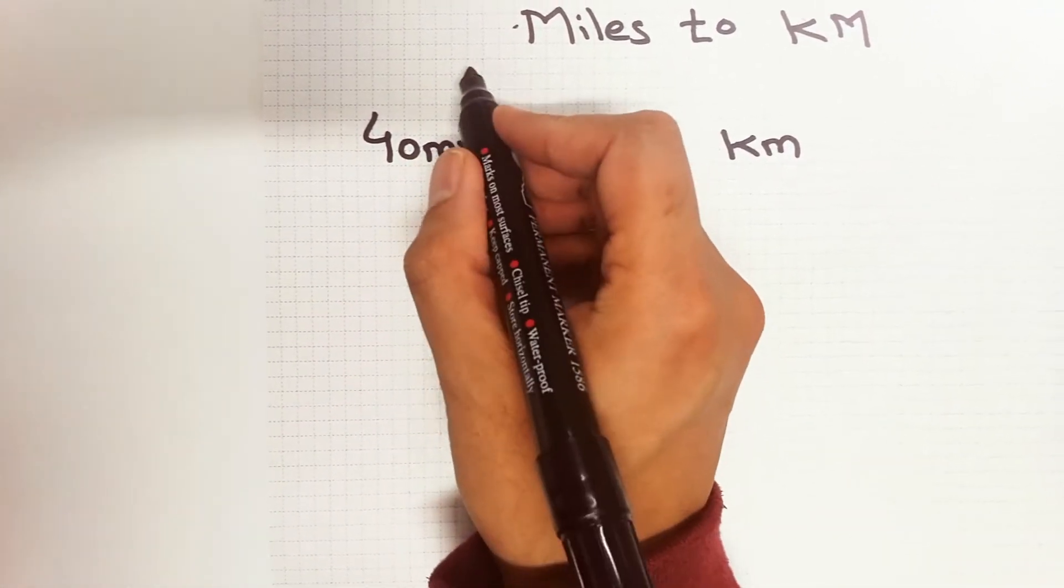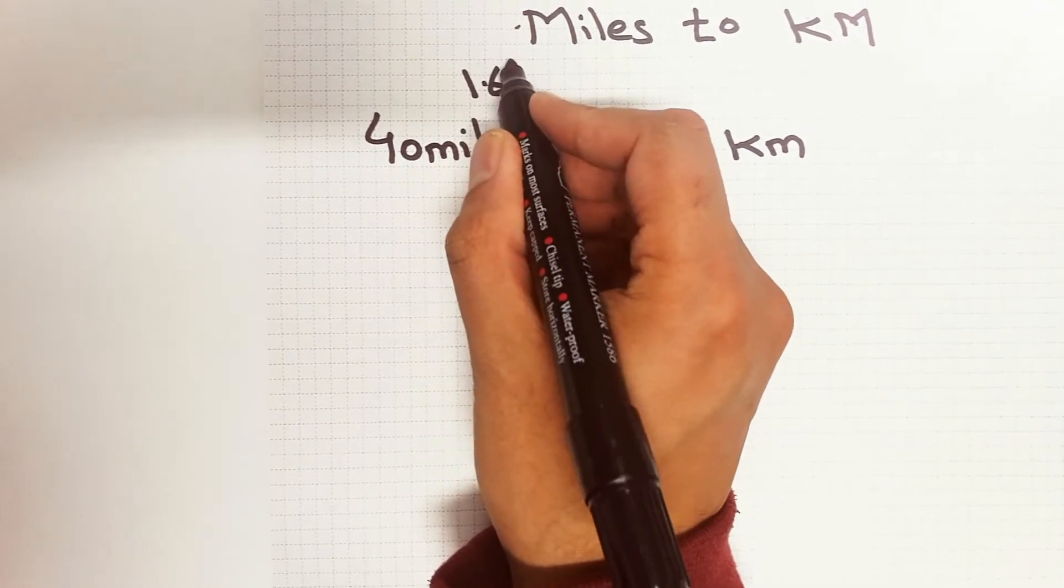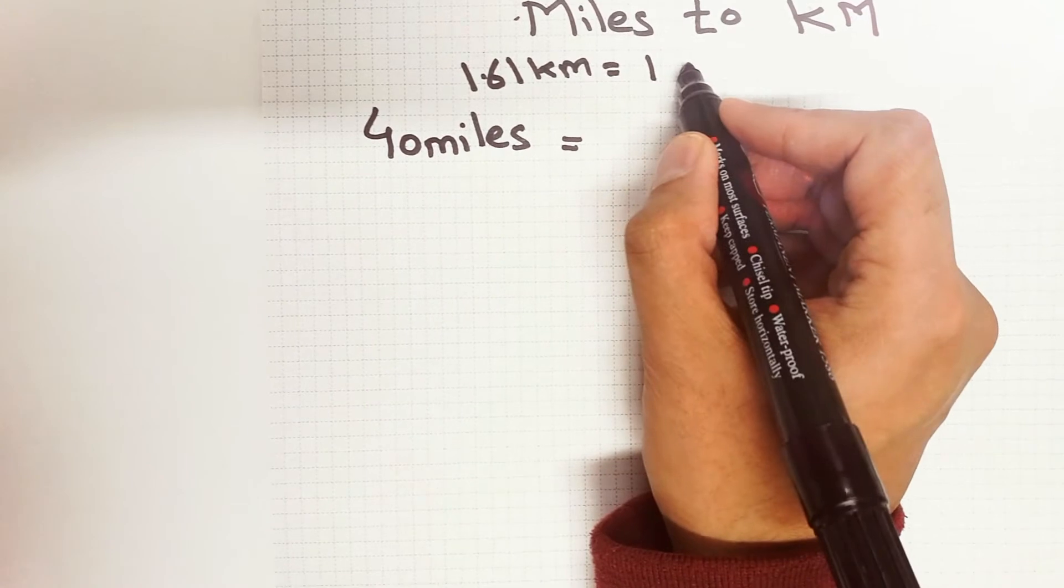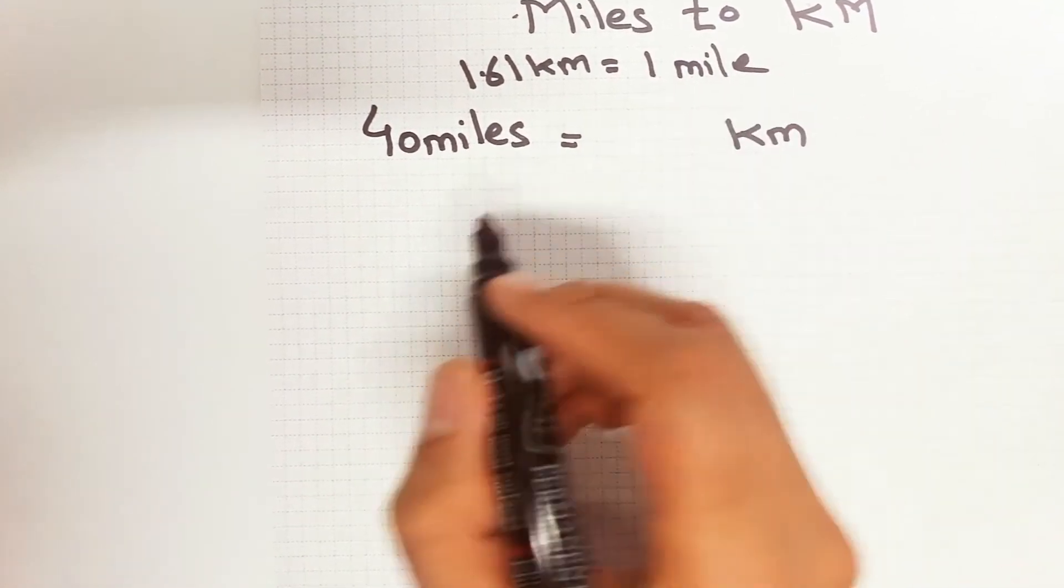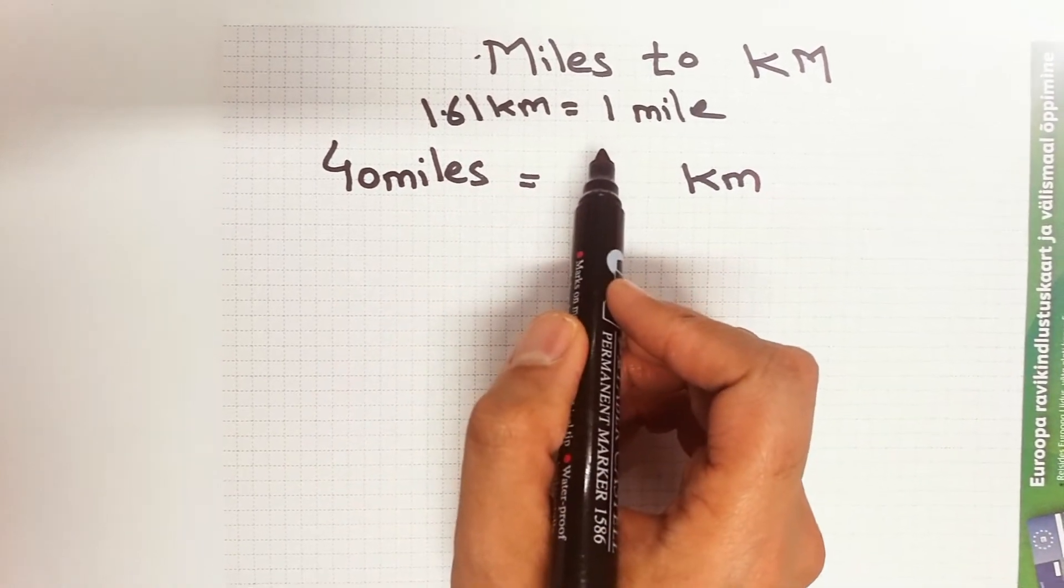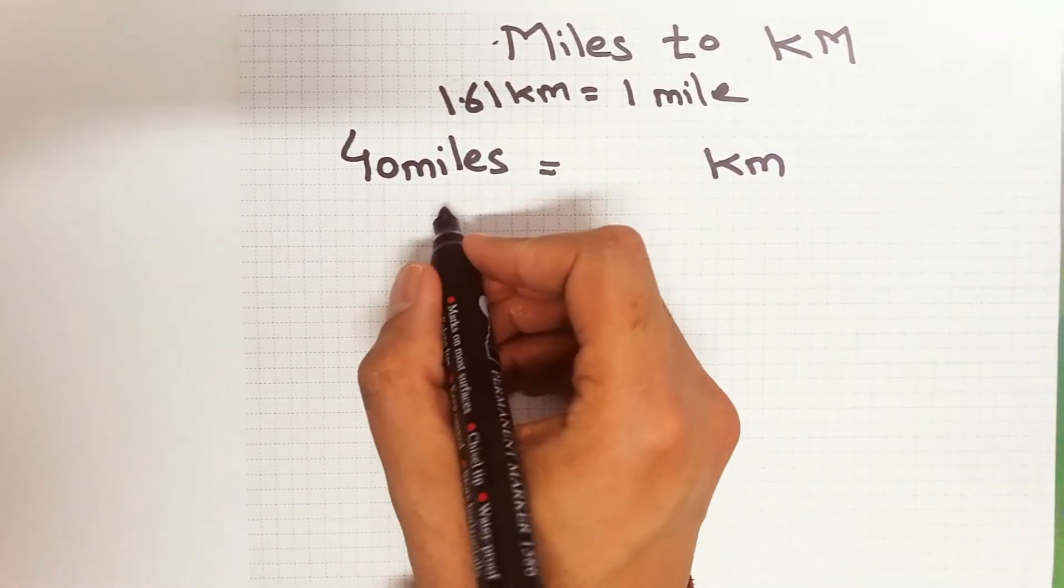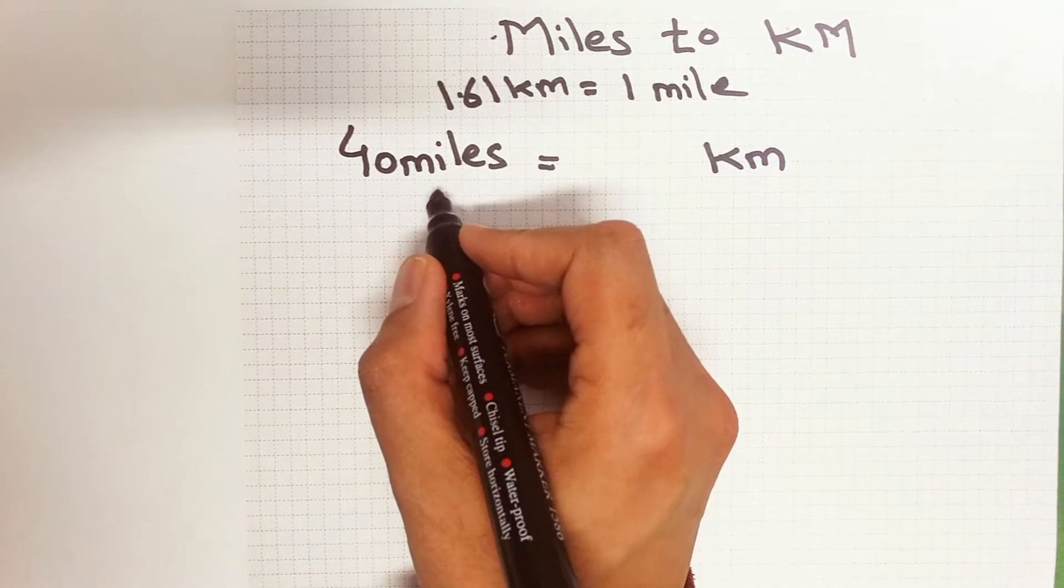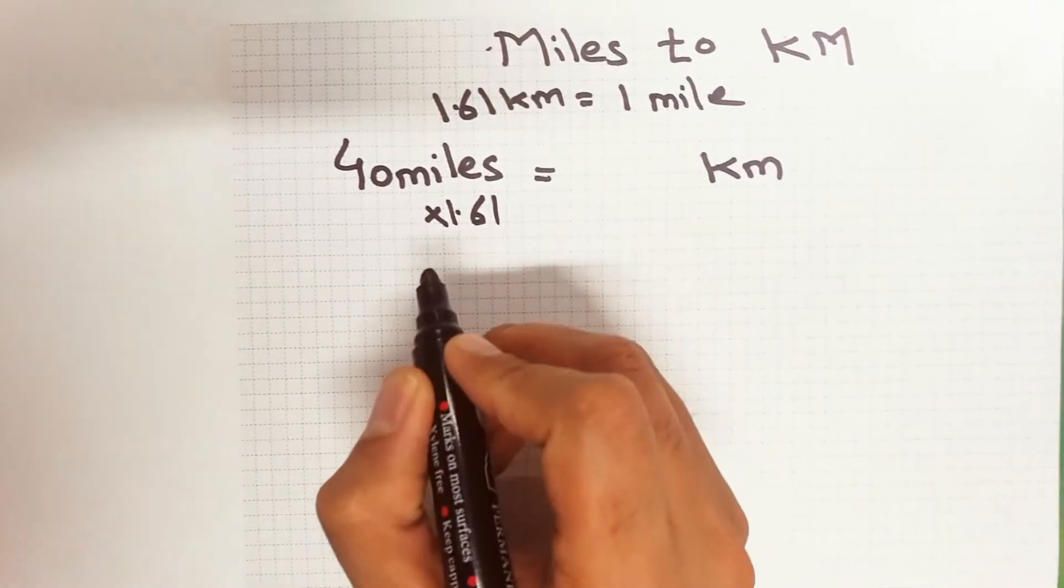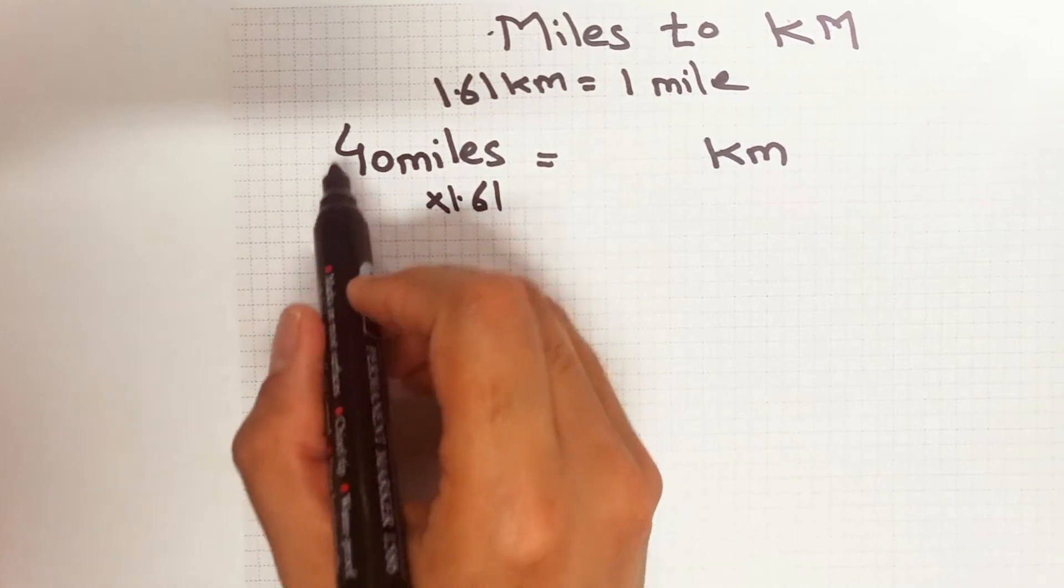The rule is 1.61 kilometers equals to 1 mile. This is the rule which is 1.61 kilometers equals to 1 mile. So now what we will do is we will just put here 1.61. First of all, what we do is we will multiply this 40 whole with this 1 only.